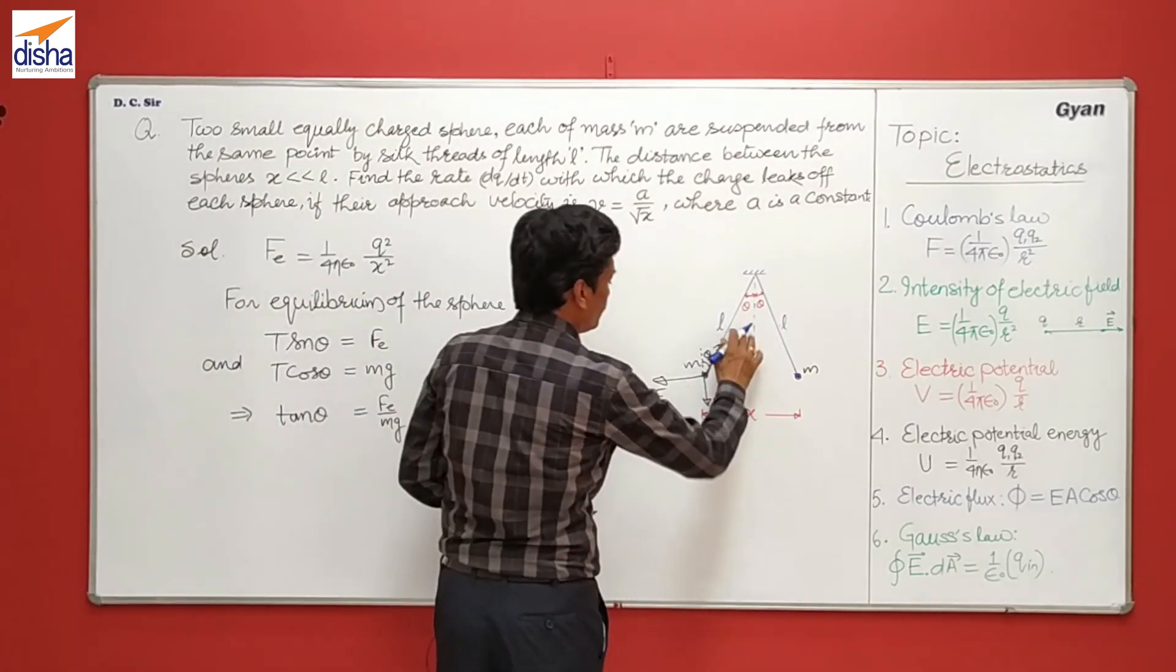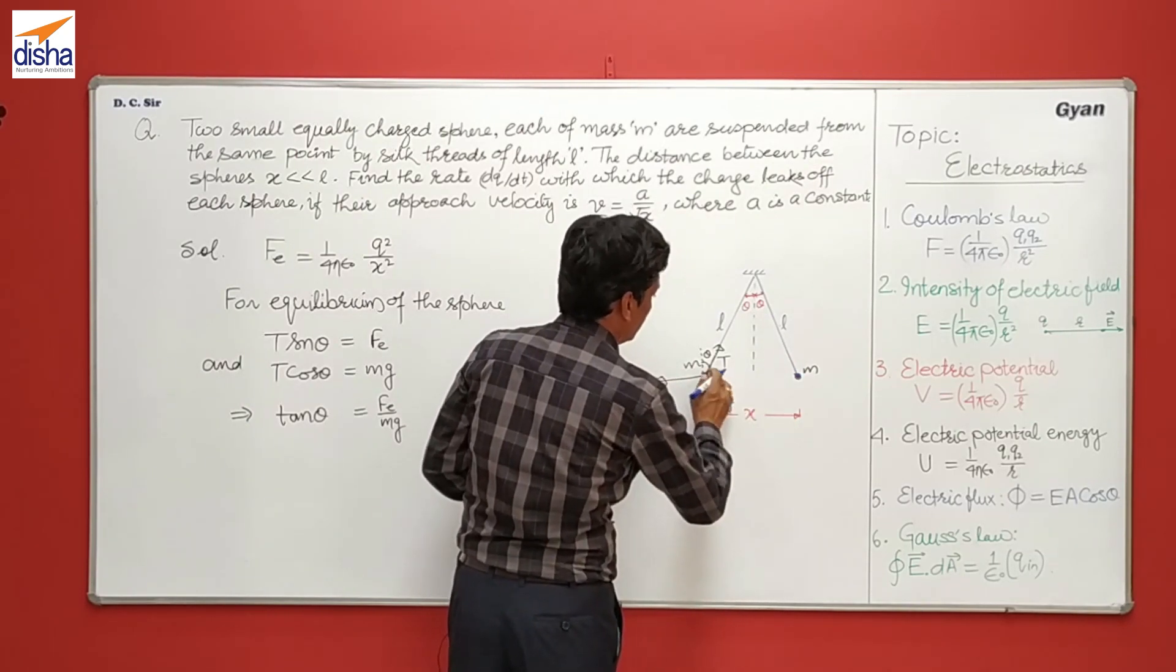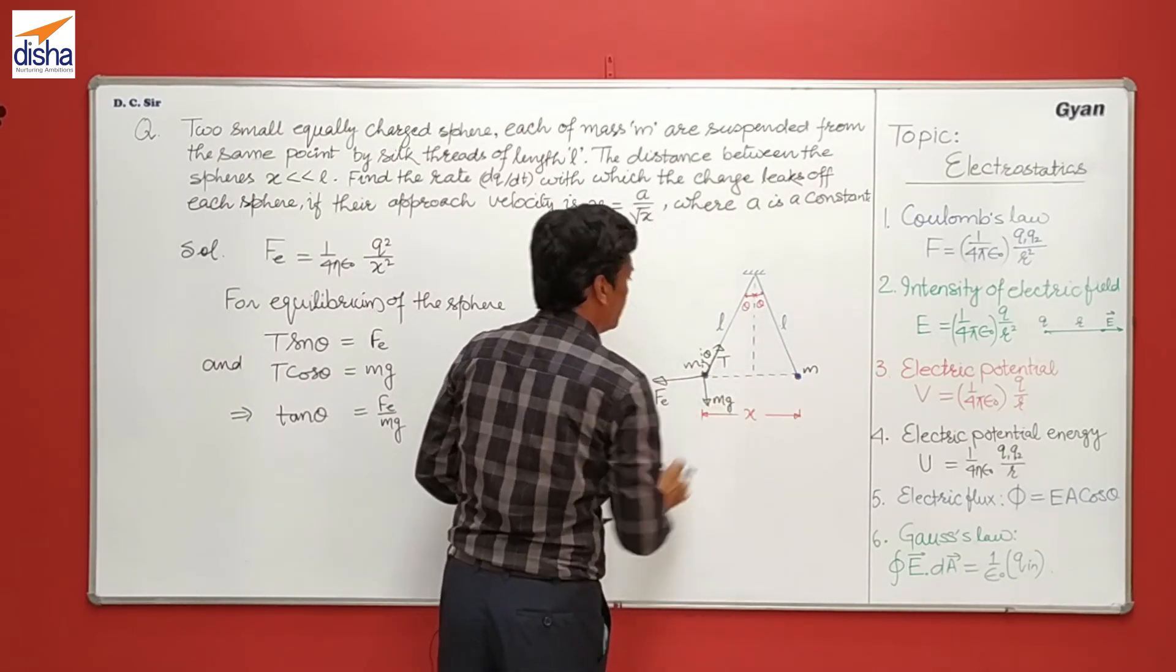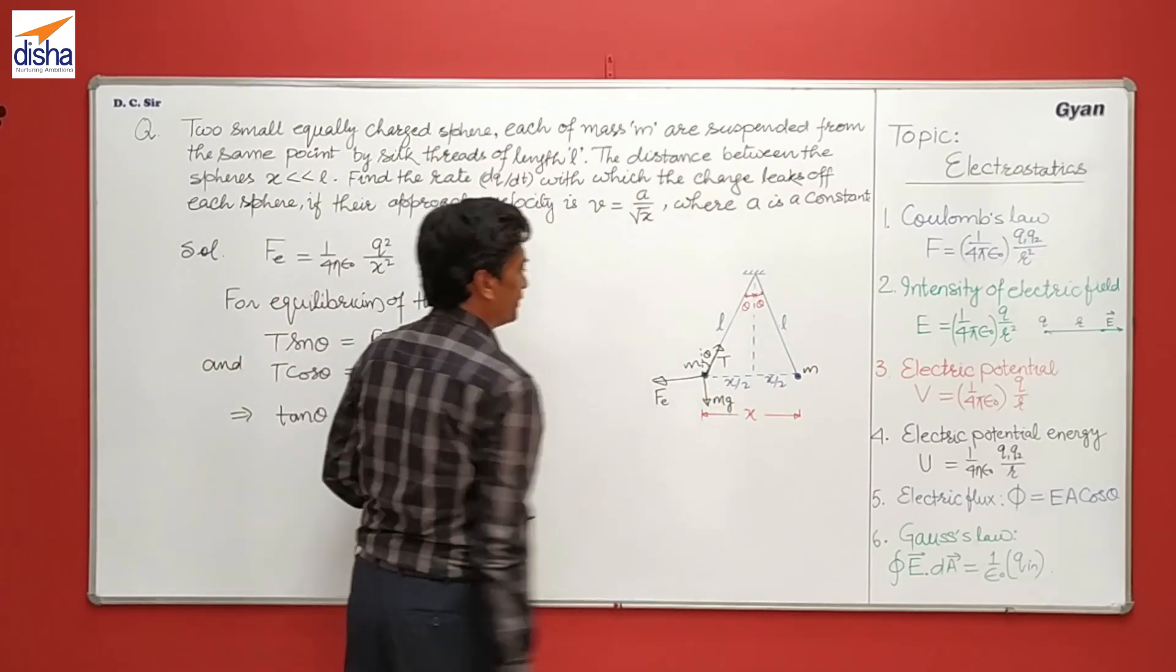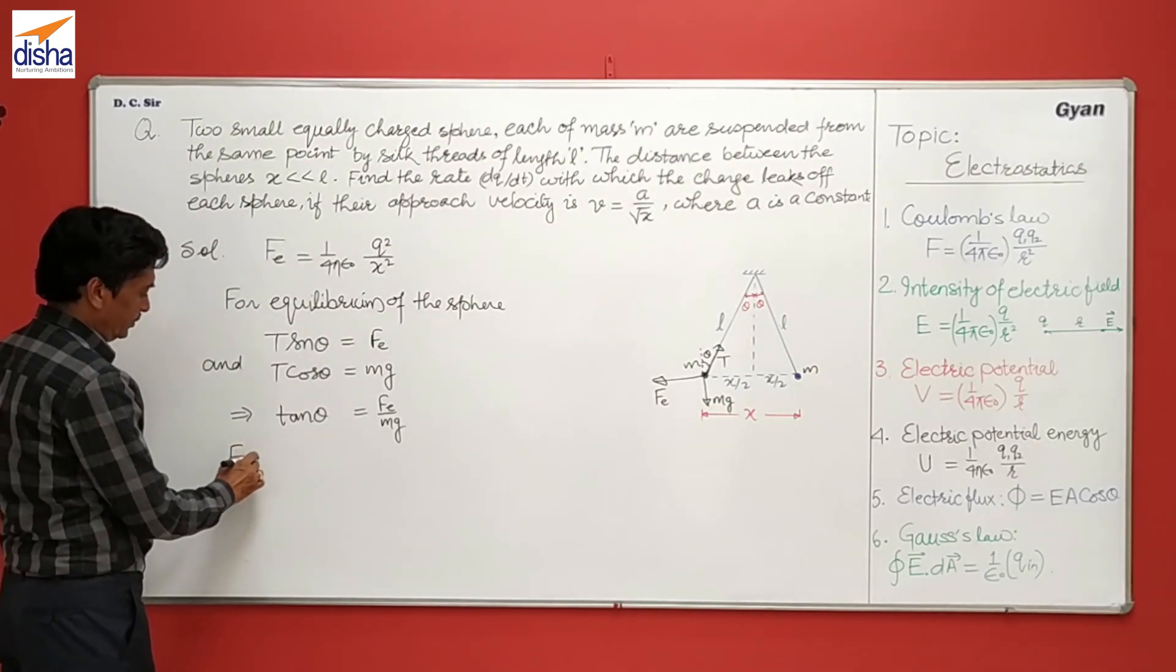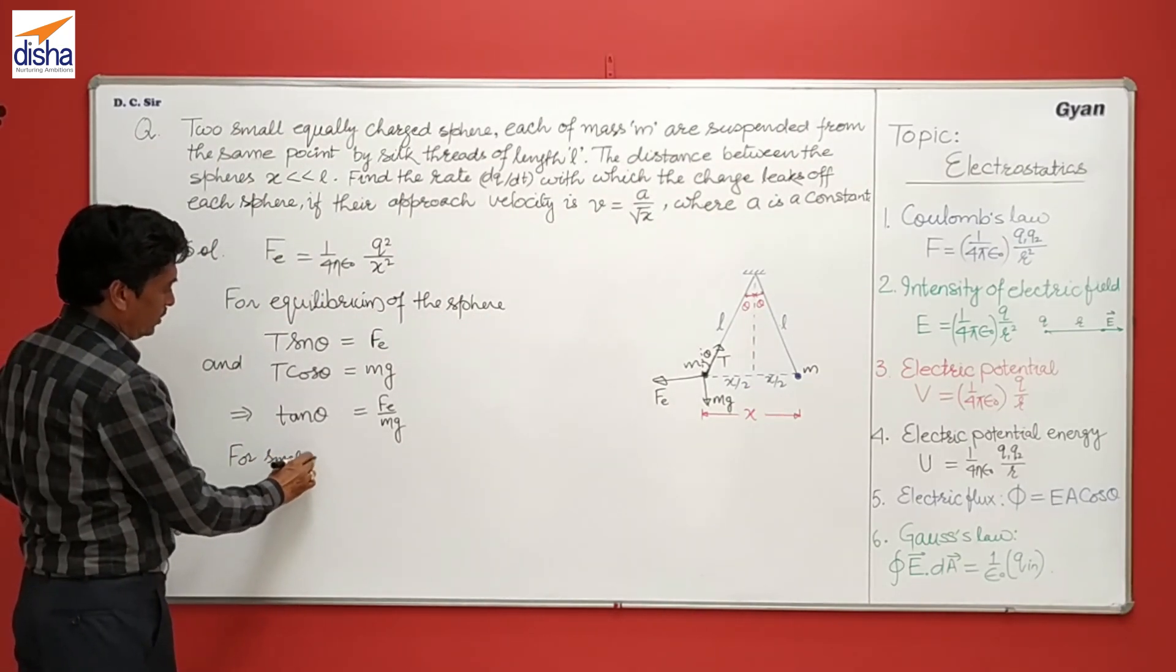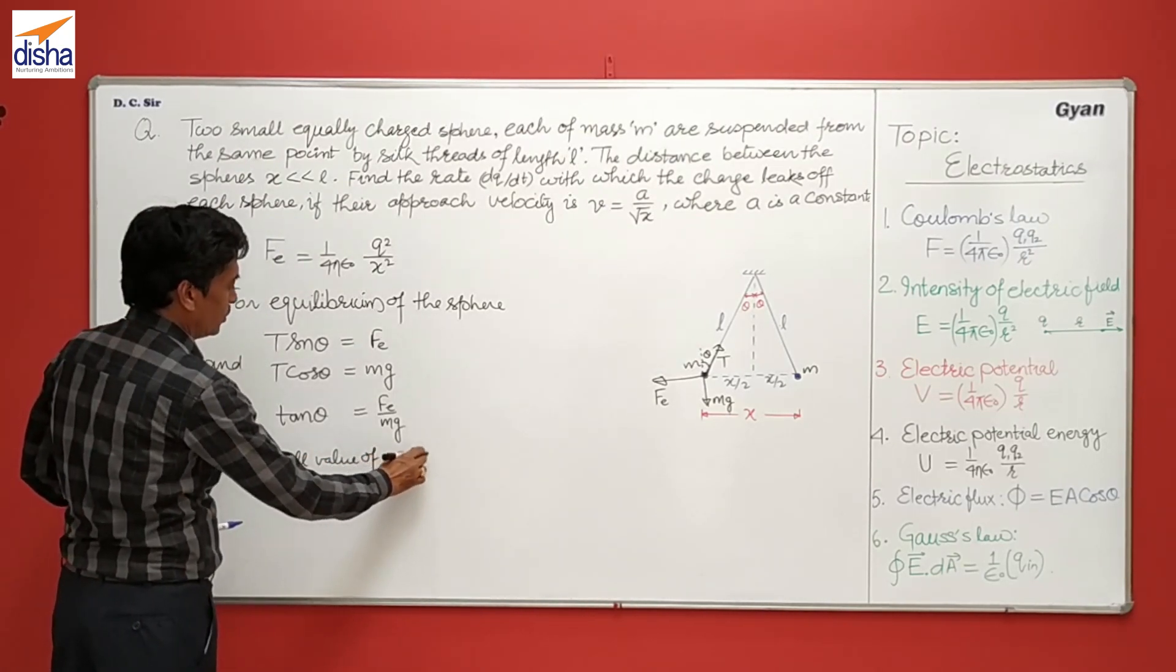Now, the theta is small, so tan theta can be written as sin theta. And here this is x, so it will be x by 2, this is also x by 2. For small value of x, theta is also small.